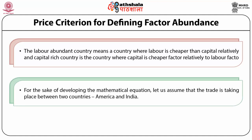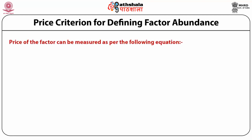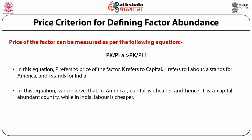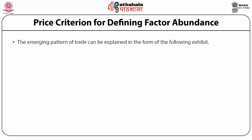For the sake of developing a mathematical equation, let us assume that trade is taking place between two countries: America and India. The price of the factor can be measured as per the following equation: PK divided by PL(A) is less than PK divided by PL(I). In this equation, P refers to the price of the factor, K refers to capital, L refers to labor, A stands for America and I stands for India. From this equation we observe that in America, capital is cheaper and hence it is a capital-abundant country, while in India, labor is cheaper.